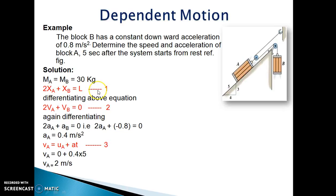Differentiating above equation, equation number 1, with respect to time, we get the velocity equation, that is 2VA plus VB equal to zero. Again differentiating equation number 2, we get the equation for acceleration, that is 2AA plus AB equal to zero.